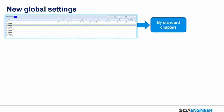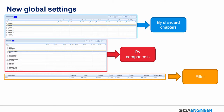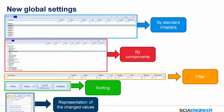There are some new global settings, and they are all available now in one window. You can sort them in different kinds of structures — this one is shown by standard chapters following Eurocode, or you can do it by components. It's also possible to use a filter to easily find the words or values you are looking for. You can change the view, change the level from standard to advanced, go back to default settings, or show only the changed values in this window.